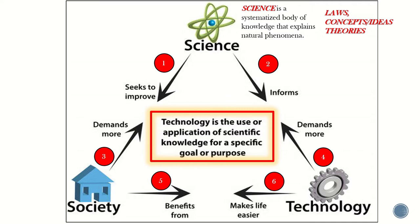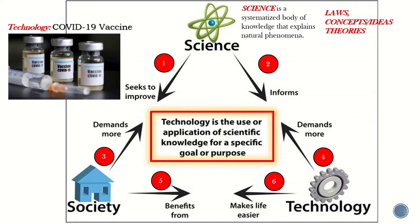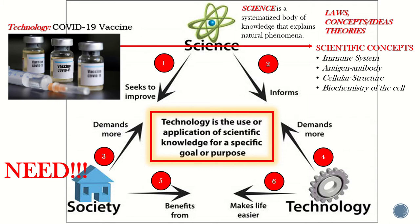Technology is the use and application of scientific knowledge for a specific purpose or goal. Science informs technology — you can only see the application of science once it is applied in technology. For example, the COVID-19 vaccine is a technology. The role of society is to determine what is needed — what technology should exist or be developed. This technology is anchored with scientific concepts such as the immune system, antigen-antibody response, cellular structure, and biochemistry of the cell.